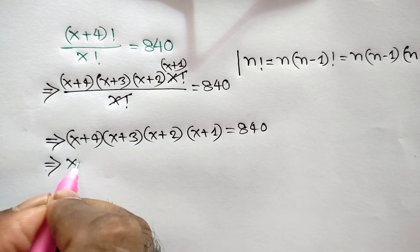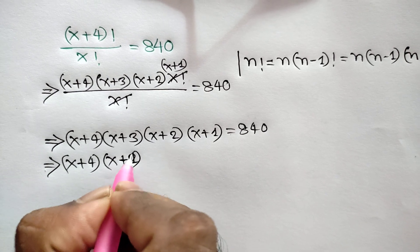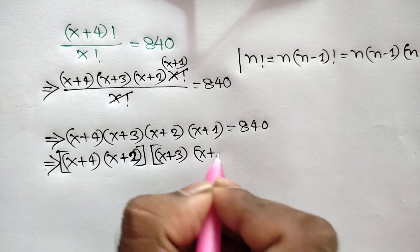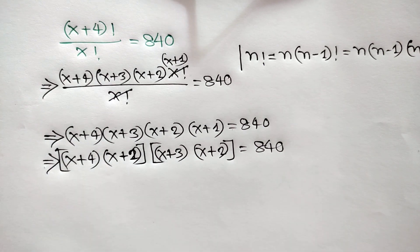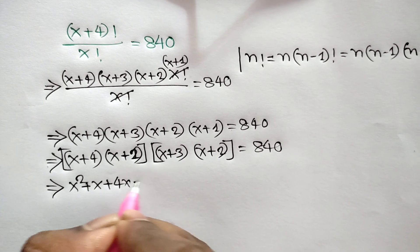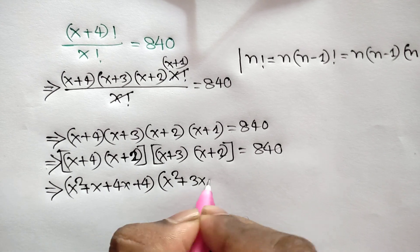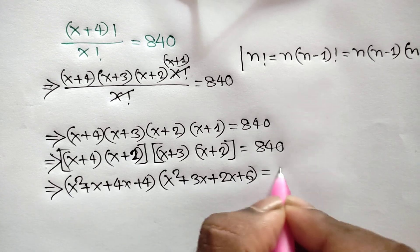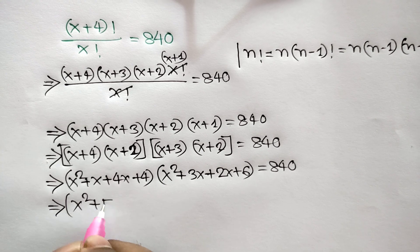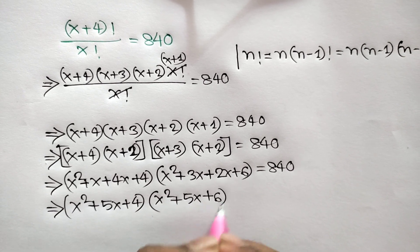Rearranging the left side we can write (x+4) times (x+1) times (x+3) times (x+2) is equal to 840. Multiplying the first two terms we get x²+x+4x+4, and multiplying the last two terms we get x²+3x+2x+6, so that is (x²+5x+4) times (x²+5x+6) is equal to 840.